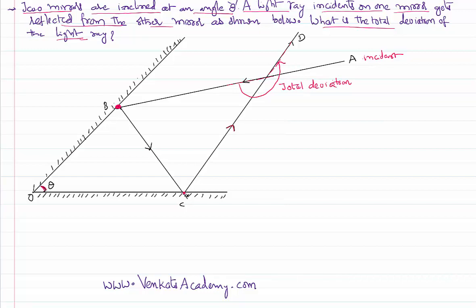Let us check what is happening at each of the incidences. The light ray first strikes the mirror at point B. The line drawn here is the normal. If we call the angle of incidence alpha, then the angle of reflection is also equal to alpha, because when a light ray is incident on a plane mirror, angle of incidence equals angle of reflection.